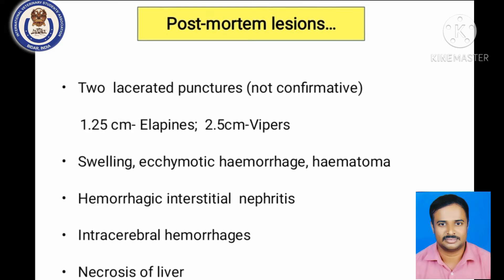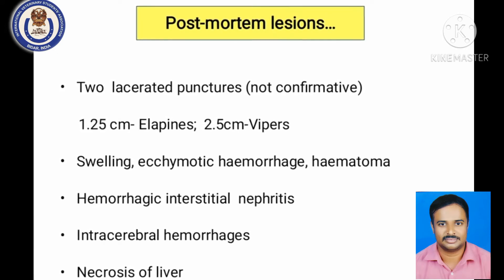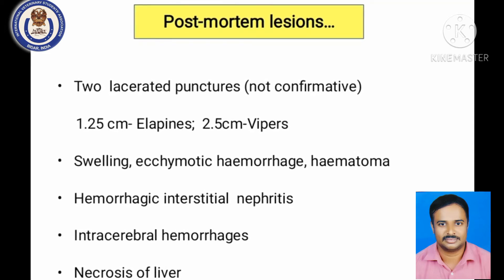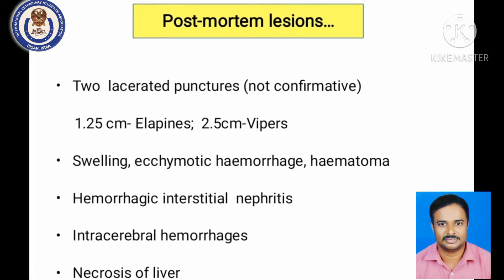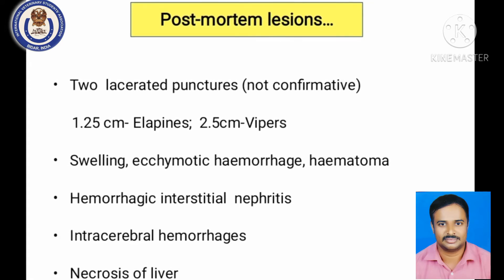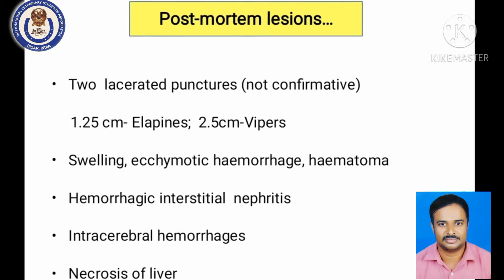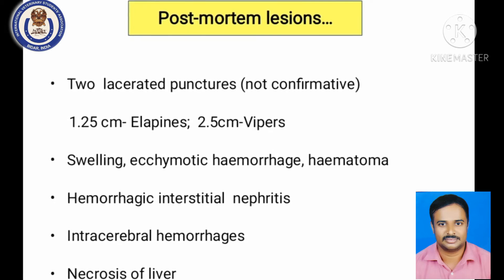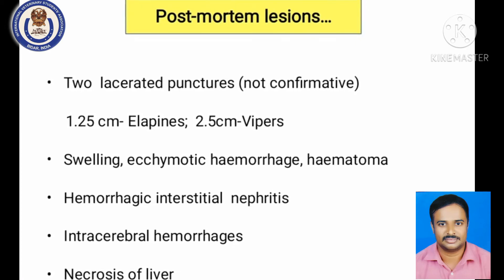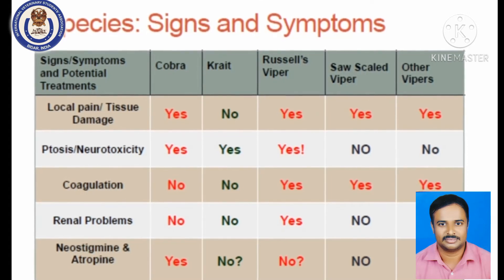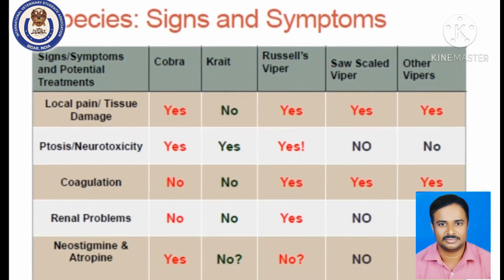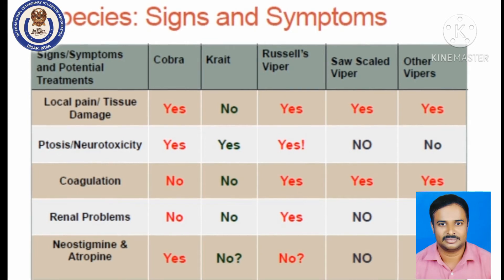Post-mortem findings in animals presenting with snake bite: fang marks or punctures can be seen but are not always visible — they are visible soon after the bite but difficult to find as time lapses. Swelling at the bitten site, ecchymotic hemorrhage, and hematoma can occur. Intracerebral hemorrhage and overall hemorrhage throughout the body are common post-mortem findings. Signs and symptoms will vary depending on the species of snake that has bitten.